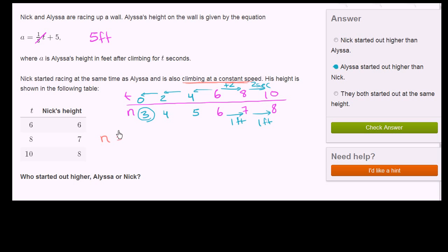So Nick's height as a function of time is going to look like, Nick's height is going to be some slope, some rate of change, essentially his height per second times time, plus his initial position. So how can we solve for m the slope and his initial position?